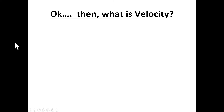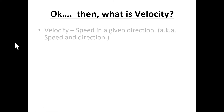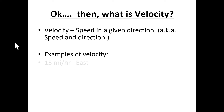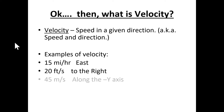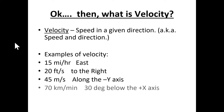What is velocity? Velocity is speed in a given direction. Examples of velocity: 15 miles per hour east, 20 feet per second to the right, 45 meters per second along the negative y-axis, 70 kilometers per minute 30 degrees below the positive x-axis. All of these are legitimate velocities depending on your reference frame.